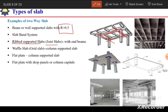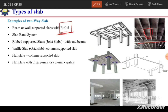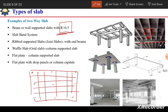In a ribbed or joist slab with end beams, if joists are provided in two perpendicular directions and the panel between them has an aspect ratio greater than 0.5, it is a two-way slab. Sometimes there are no primary beams — only end beams, columns, and joists in two perpendicular directions — and if R for those panels exceeds 0.5, the slab is two-way.